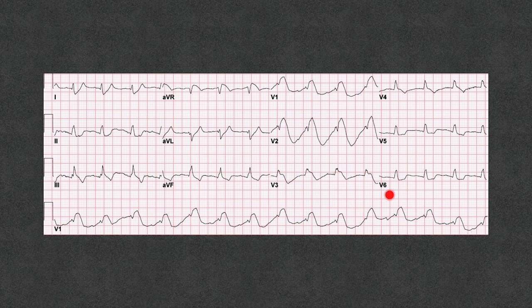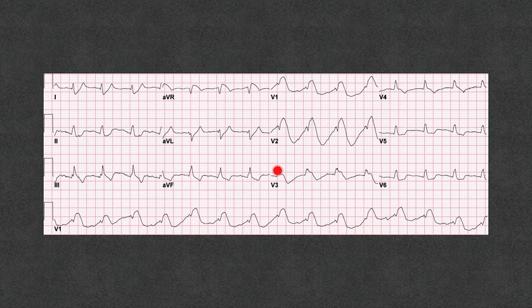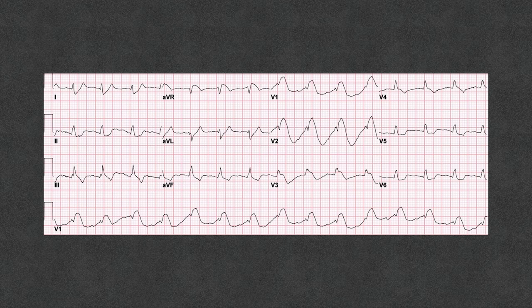This EKG shows a really bizarre QRS — I cannot distinguish the elements of the QRS complex, and there may be P waves embedded just before the QRS. There appears to be ST elevation as well. Whenever you see this kind of EKG, think of hyperkalemia, because hyperkalemia can mimic STEMI. If STEMI is suspected, activate the cath lab, but I would also start treatment for hyperkalemia immediately. This patient's potassium came back at 8.